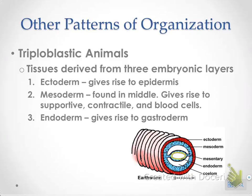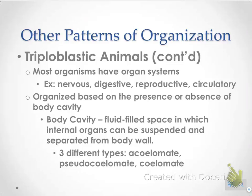Triploblastic animals have three layers. They still have the ectoderm and endoderm, but now they also have a mesoderm, which is in the middle. The ectoderm gives rise to the epidermis or skin, the endoderm to the gastrodermis or digestive system, and the mesoderm to supportive muscles, contractile tissue, and blood cells. These organisms also have organ systems — think about us as humans: we are triploblastic and have a nervous system, digestive, reproductive, circulatory, and many other specialized organ systems.